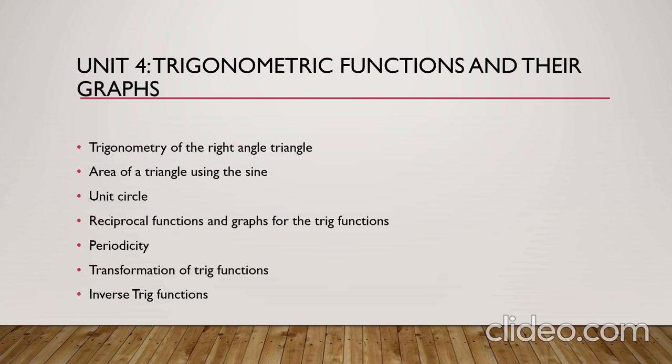Then we will move to the reciprocal trigonometric functions: cotan theta, which is equal to 1 over tan theta; cosecant theta, which is equal to 1 over sine theta; and secant theta, which is equal to 1 over cosine theta. After introducing these six trigonometric functions, we will use them to solve the right angle triangle.